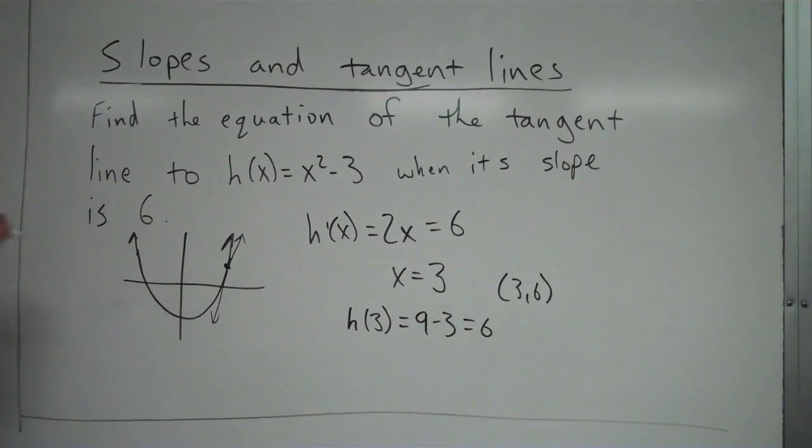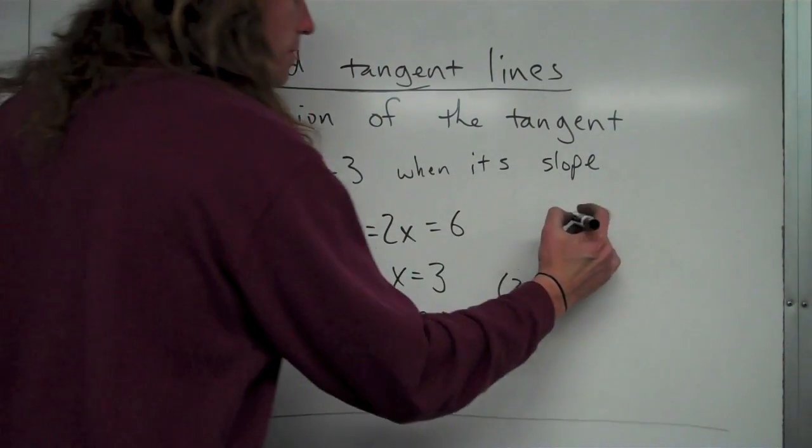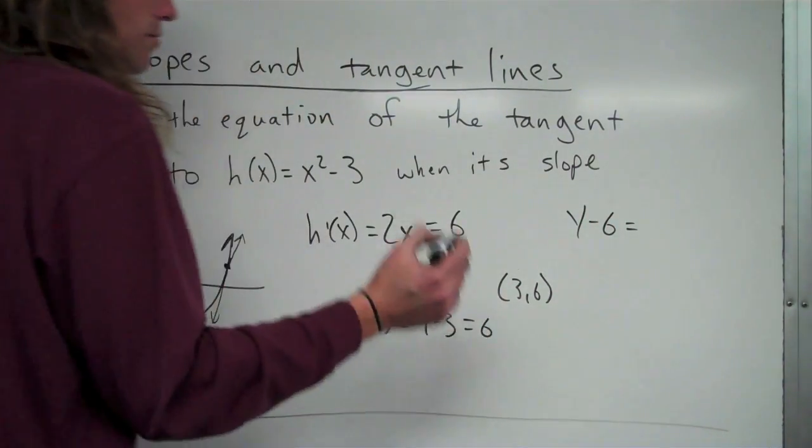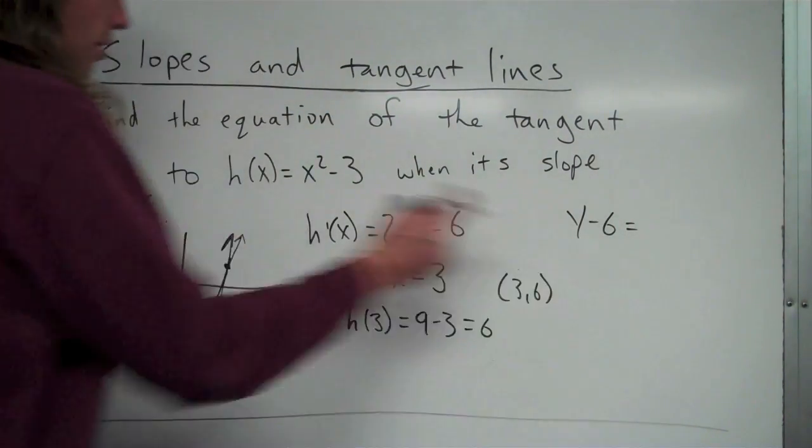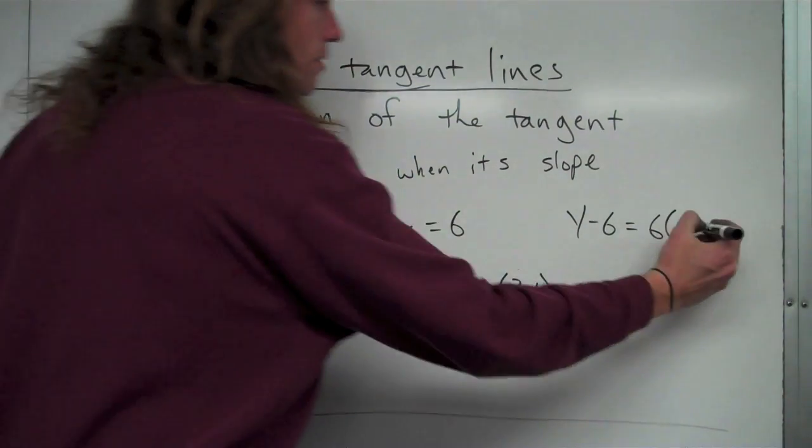My slope, which I was given, is 6. So I'm going to just go ahead and put this into point-slope form. So it'll be y minus y₁, which is y minus 6, is equal to m, which is the slope, which is 6 right here, times x minus x₁, which is just 3.